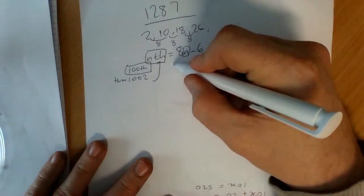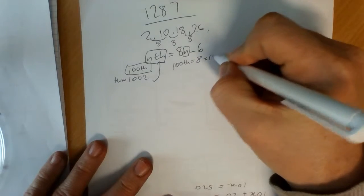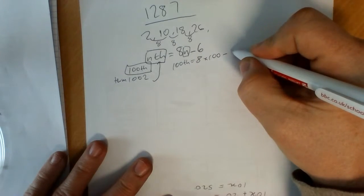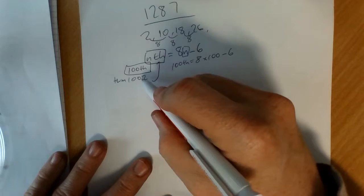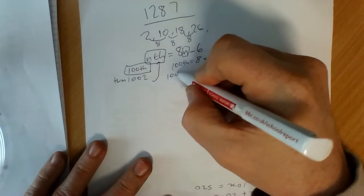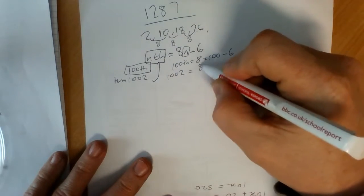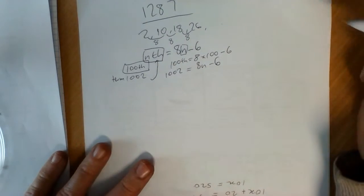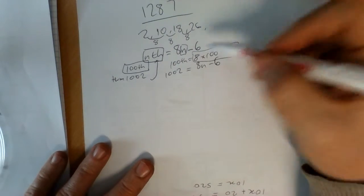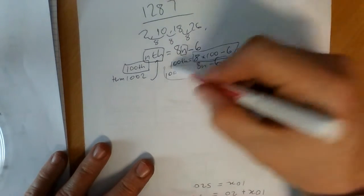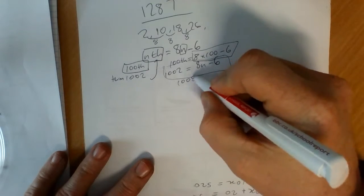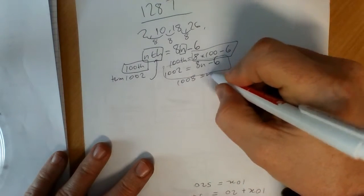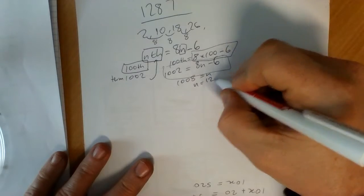So the 100th term comes from doing this. Whereas answering the question which term is 1002 comes from doing this and then solving an equation. When you calculate that you get the 100th term. When you solve this, I think it's 126.